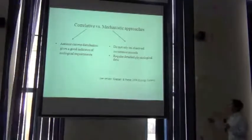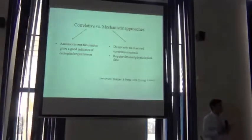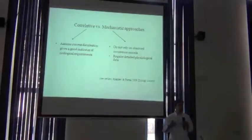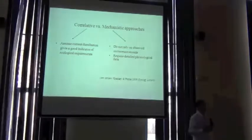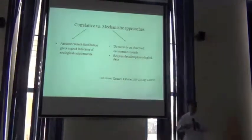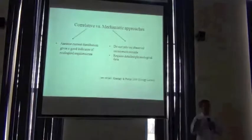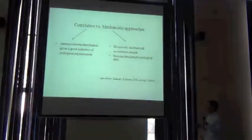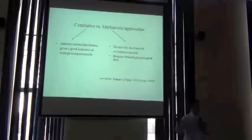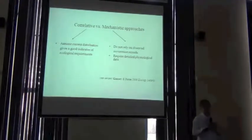There's a fundamentally different way of looking at this: taking a more mechanistic approach, where instead of relying on occurrence records, we rely on a fundamental physiological understanding of how the species functions. There are some really cool models worked on by strong research groups around the world — mechanistic distribution models and dynamic global vegetation models — but they tend to be very data-hungry and therefore applicable to a much smaller selection of species.